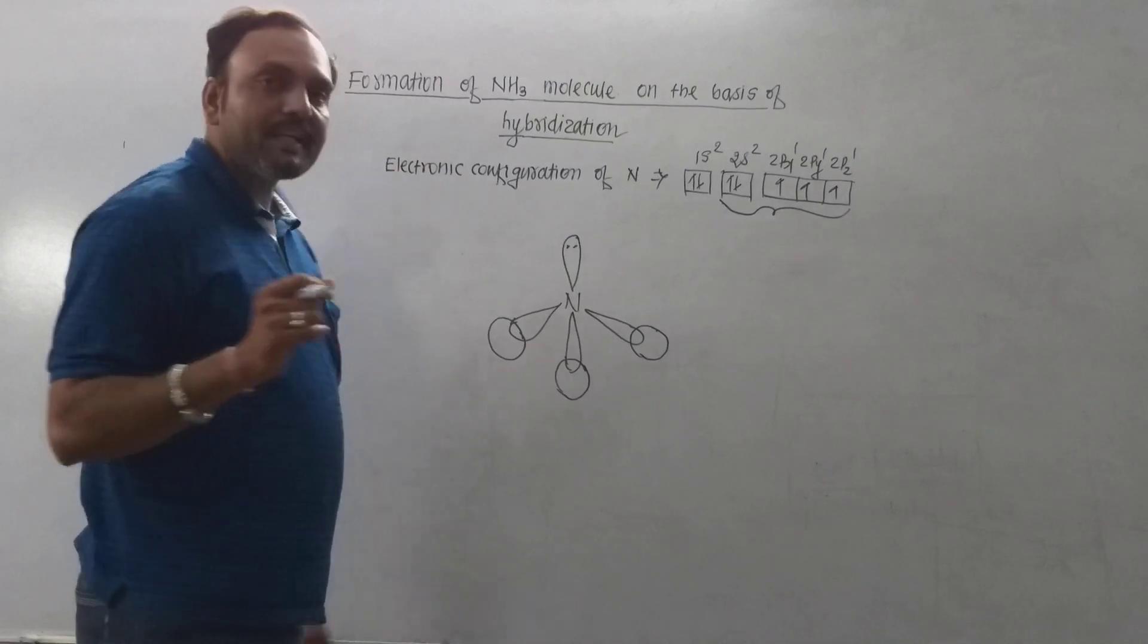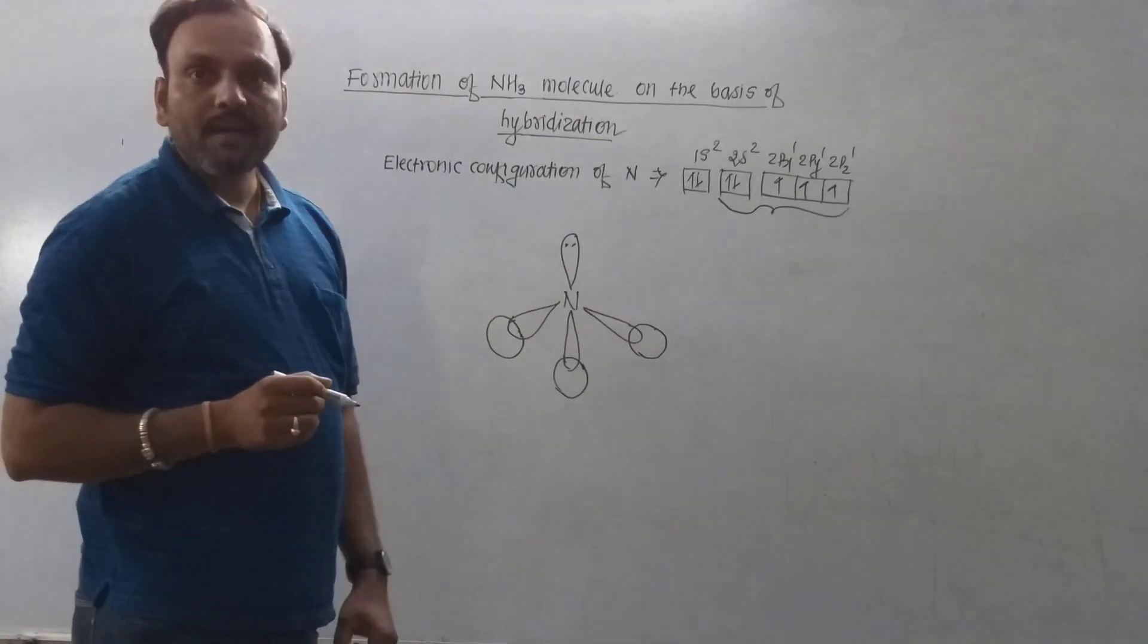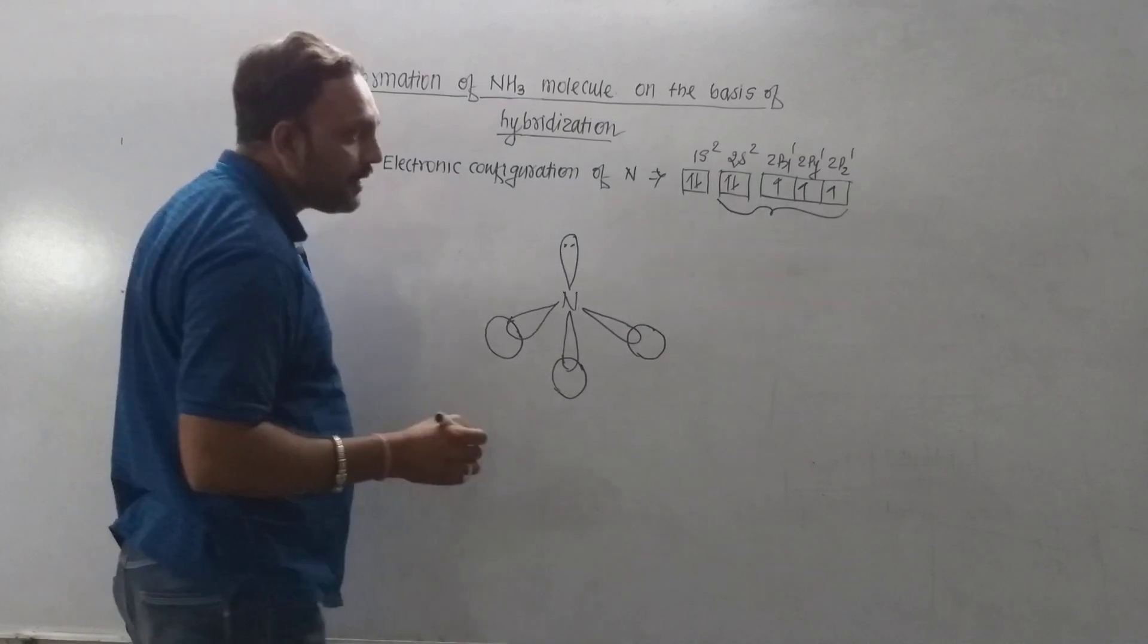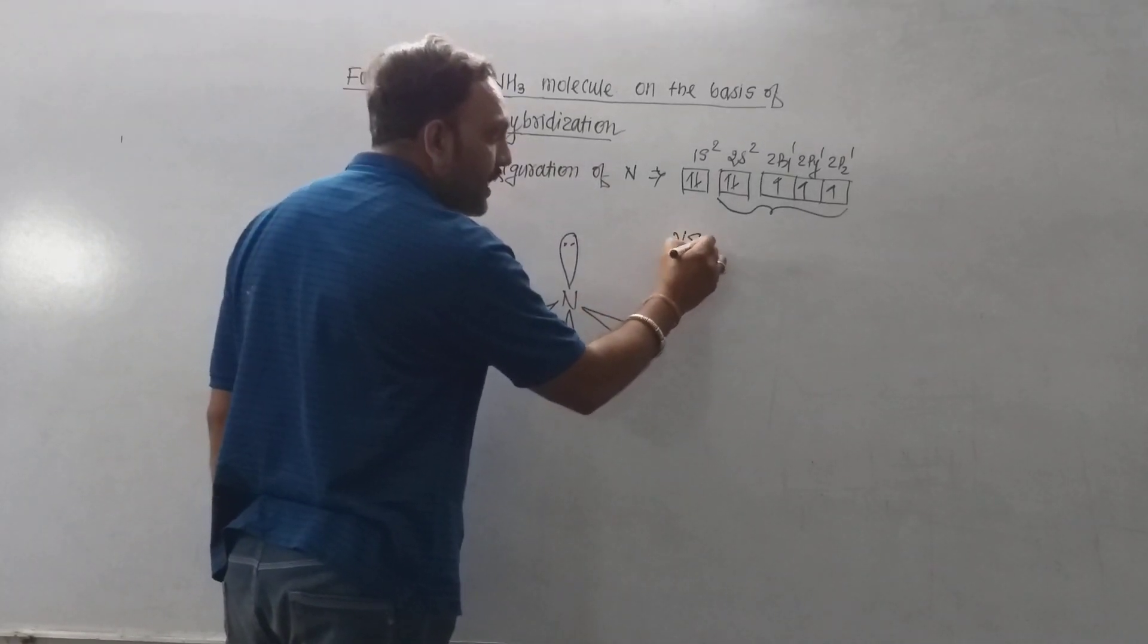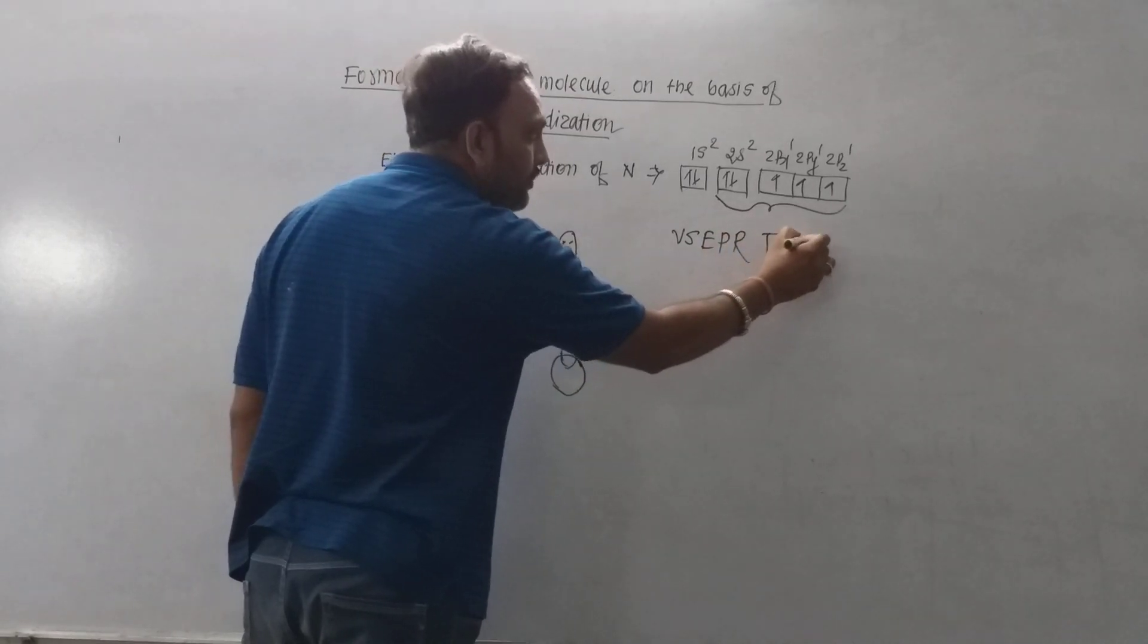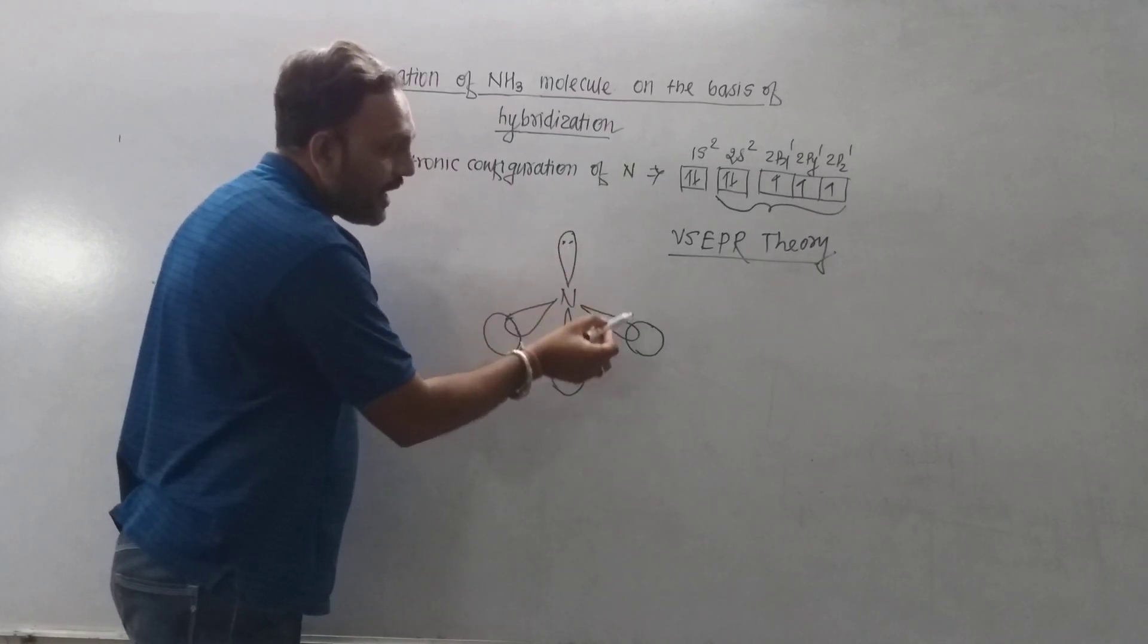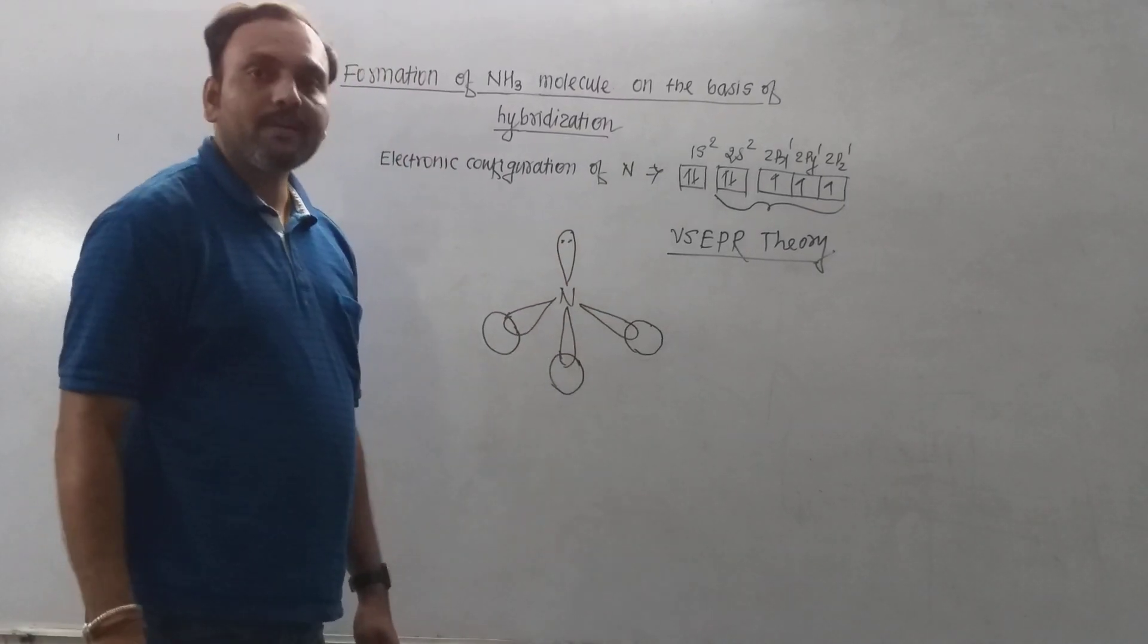In case of ammonia, nitrogen contains a lone pair of electrons. According to valence shell electron pair repulsion theory, repulsion between lone pair and bond pair of electrons is significant.